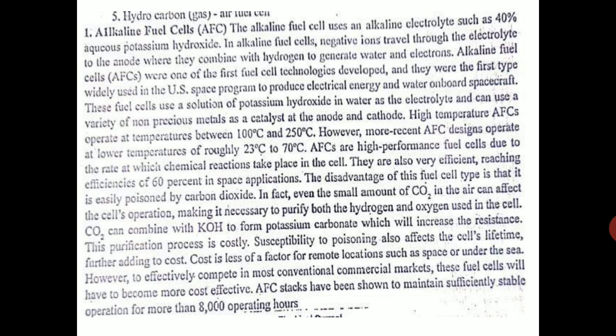Alkaline fuel cells were the first fuel cell technology developed and were the first type widely used in the US space program to produce electrical energy and water on board spacecraft. These fuel cells use a solution of potassium hydroxide in water as the electrolyte and can use a variety of non-precious metals as catalysts at the anode and cathode.